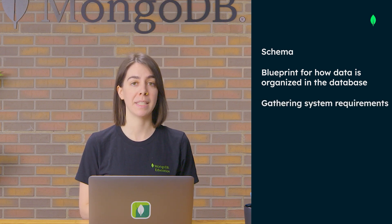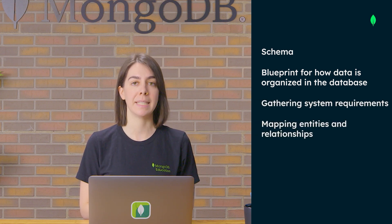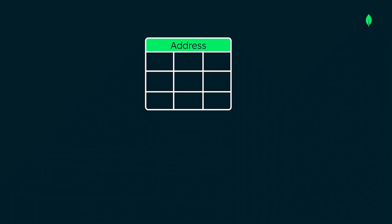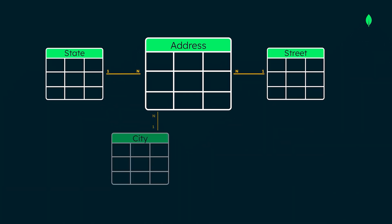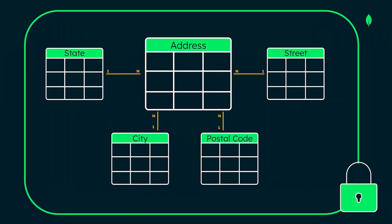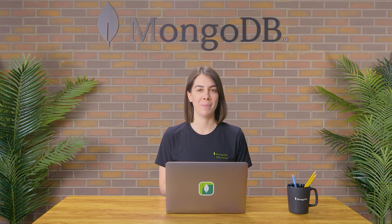Designing any schema involves gathering system requirements and mapping the entities and their relationships. You are probably familiar with data modeling and schema design for relational databases. The relational model organizes data into rows and columns within a series of interlinked tables, requiring an explicit predefined schema where rules and constraints are applied to the entire database. This means that any future schema changes can require an extensive migration process.